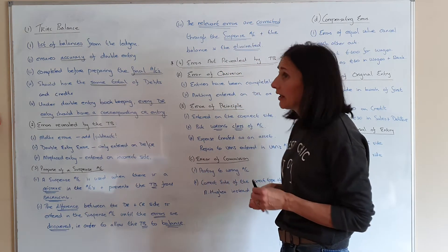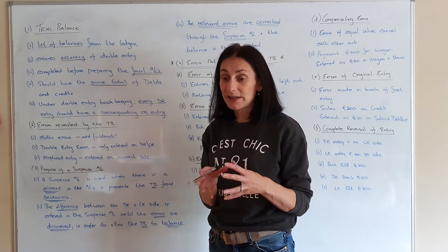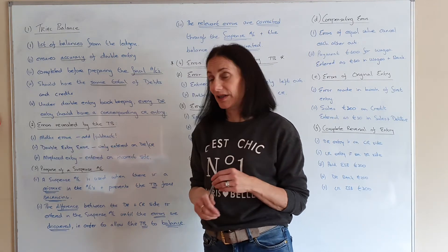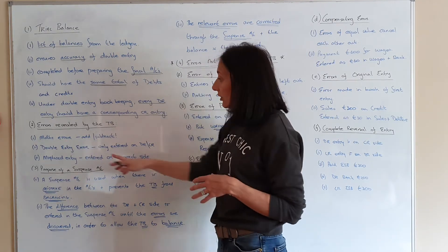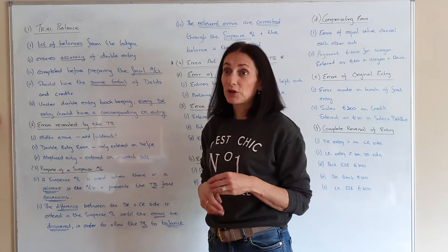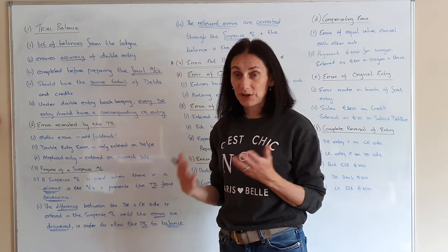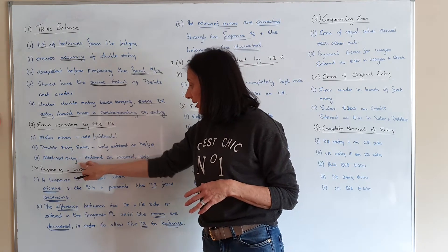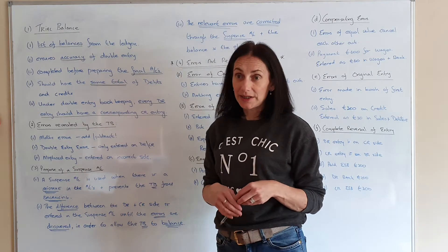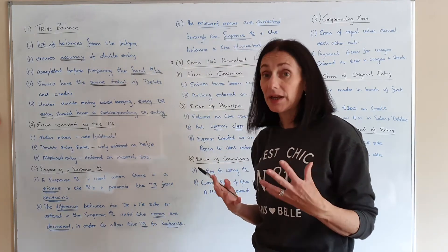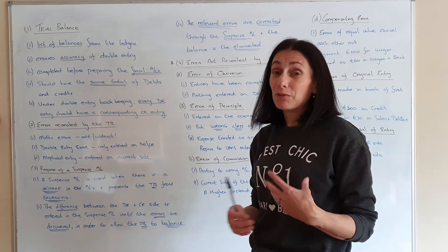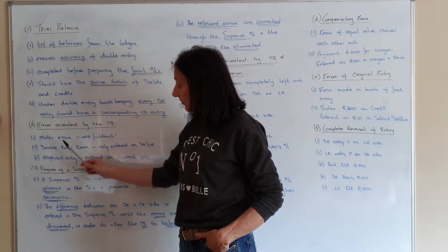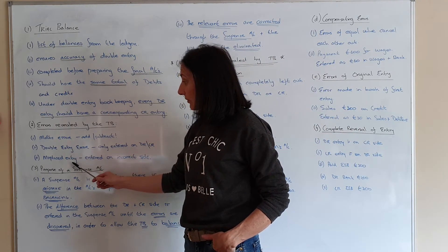Errors revealed by the trial balance: if the trial balance didn't balance, what type of mistakes would it show? First, a math mistake — an addition or subtraction error. Second, a double entry error — you put it on the debit but forgot the credit, so it was only entered on one side. Third, a misplaced entry — it was entered on the incorrect side, for example put on the debit twice or on the credit twice.